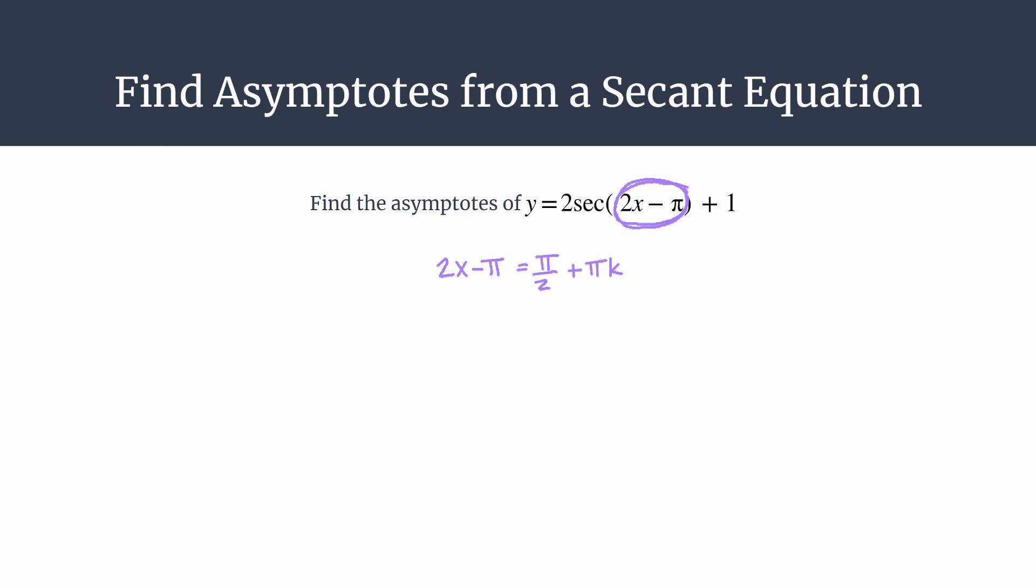And I like to remember the pi over 2 plus pi k as where cosine has its zeros or its x-intercepts. So if that helps you, that may make this even easier. Okay, so we have the inputs set equal to the parent asymptotes, and now all we need to do is solve for x. So let's first start by adding pi to both sides. So on the left side, you're simply left with 2x. On the right side, we only combine pi over 2 plus pi because those are the only like terms. The pi k is its own term, and it stands by itself. Okay, so we'll say that equals 3 pi over 2 when we add pi over 2 and pi, and then we still have that plus pi k hanging out there.